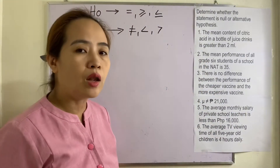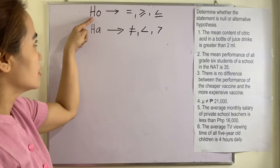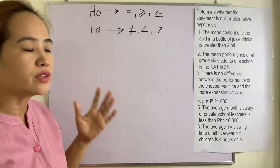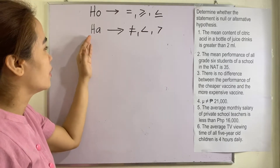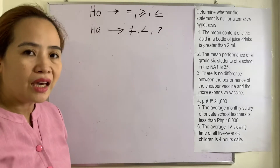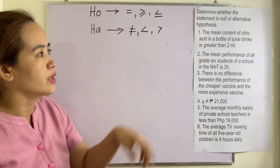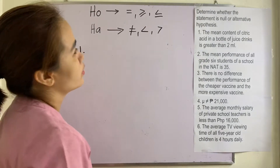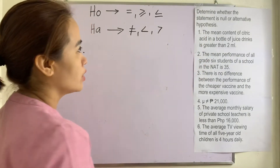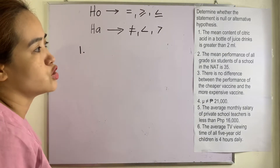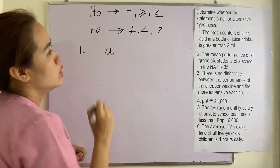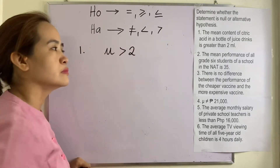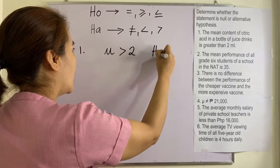Let us have examples. Determine whether the statement is null or alternative hypothesis. Remember that null hypothesis is denoted by H sub O and uses the symbols equals, greater than or equal to, or less than or equal to. Alternative hypothesis is denoted by H sub A and uses not equal to, less than, and greater than. Number one: the mean content of citric acid in a bottle of juice drinks is greater than 2 ml. Translating that into a mathematical statement gives us greater than 2 ml, so this is an alternative hypothesis.